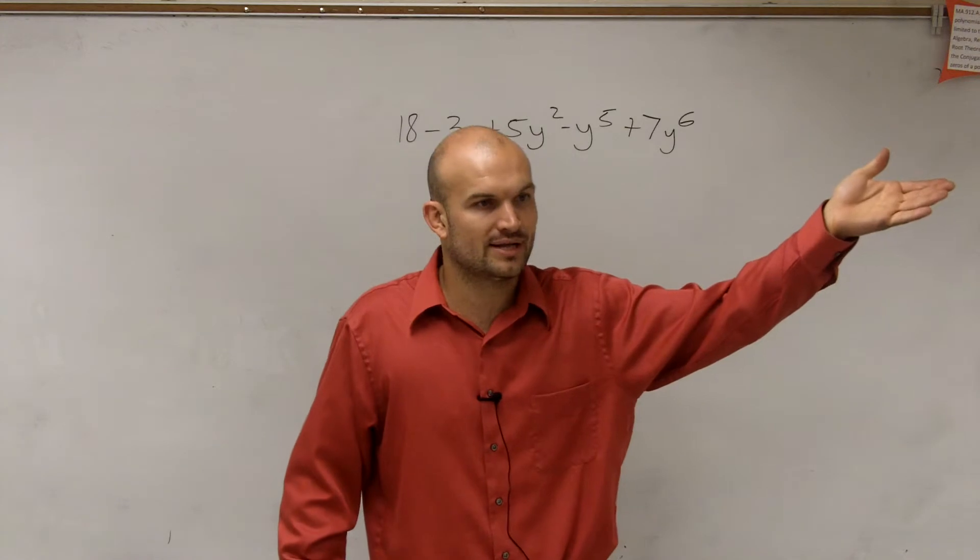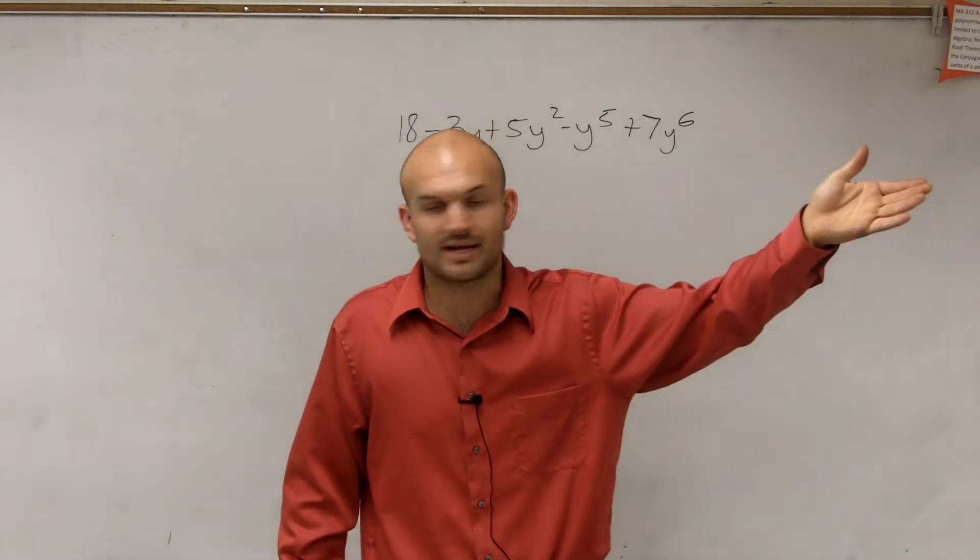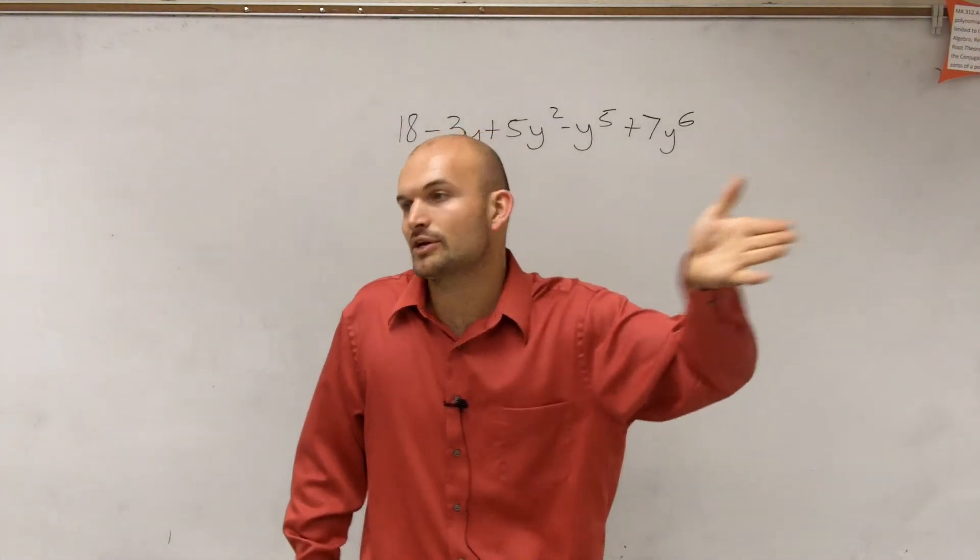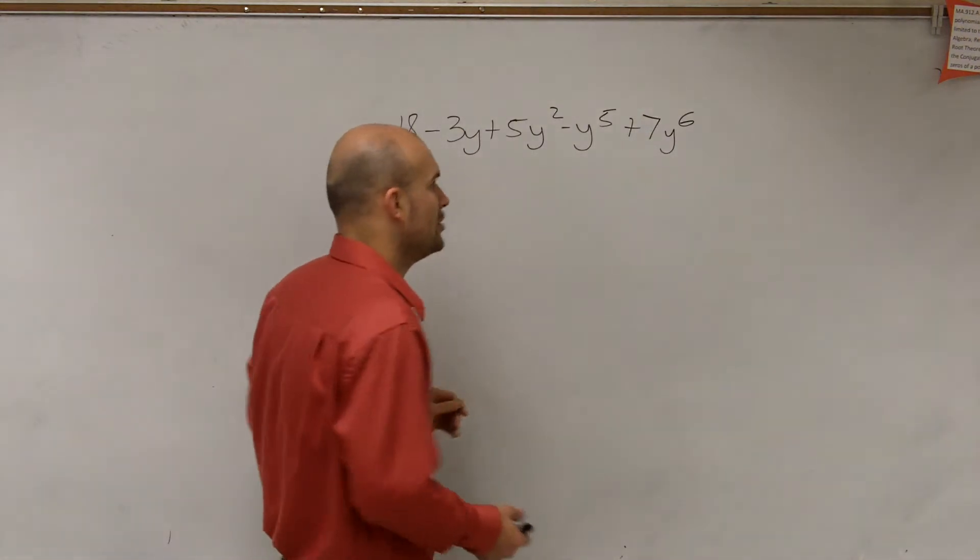So therefore, we're going to take the largest degree, the monomial with the largest degree, and we're going to list that first. And then we're going to go down in descending order, which we'll call standard form of a polynomial.